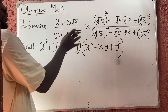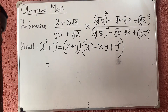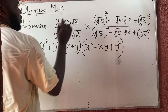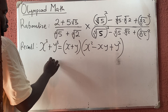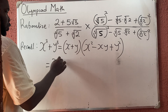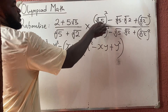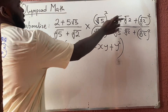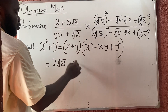Now when you multiply, this times this will give you the cube root of 25, because 5 squared is 25. This cannot cancel. These terms will give you minus the cube root of...